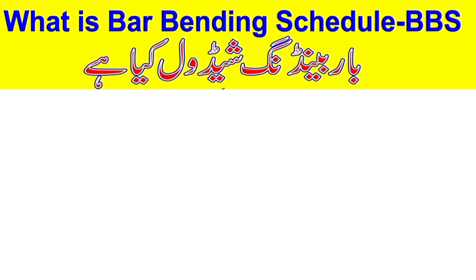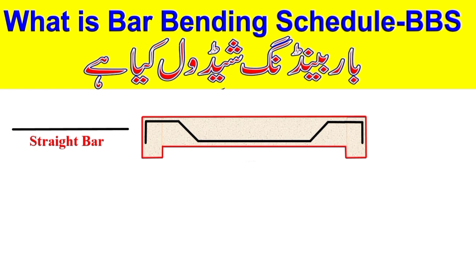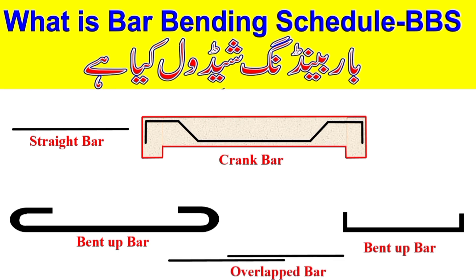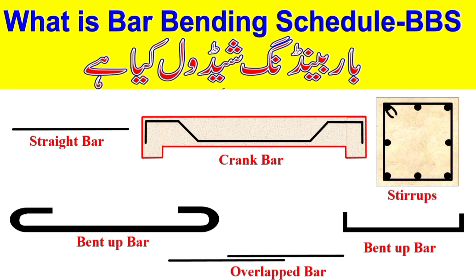Dear students, remember that in different types of construction work, we either use steel in the form of straight bar, or in the form of crane bar, or in the form of wind-up bar. Along with that, we either overlay the steel or use it in the form of strip.